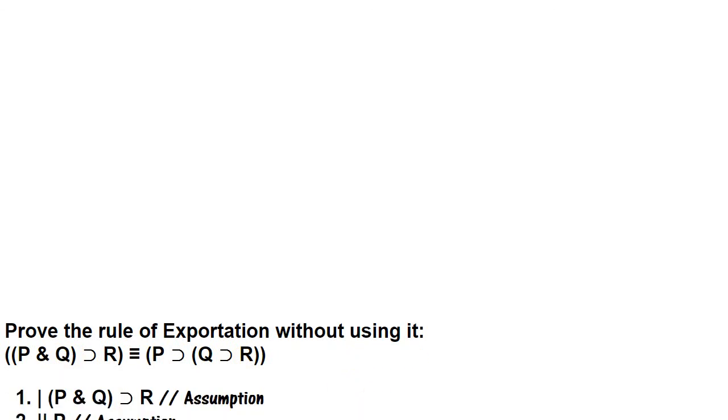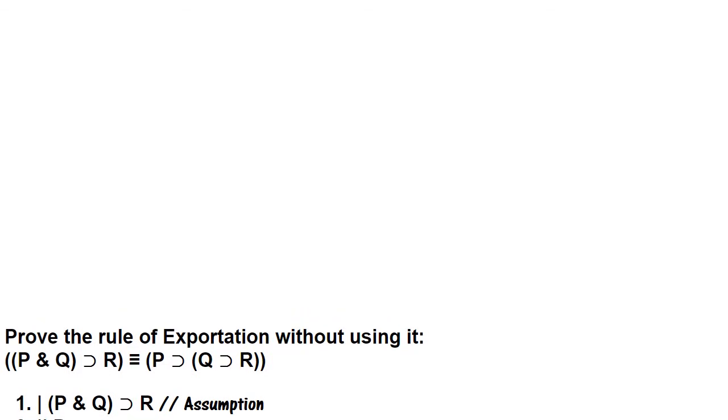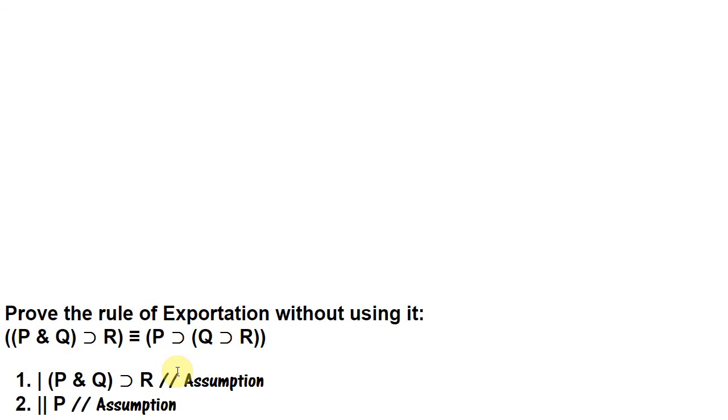Okay, so our first step is to assume if p and q, then r. Because we're trying to get the conditional if p and q, then r, then if p, then if q, then r. And now what we want to try to do is get the conditional if p, then if q, then r. And that itself is a conditional, so we can use conditional proof to get that. So within the conditional proof that we've already started, we're making a second assumption. And that second assumption is nested within the first assumption. So it has a scope of its own that is narrower than the scope of the outer assumption.